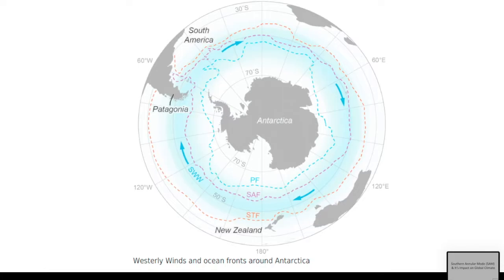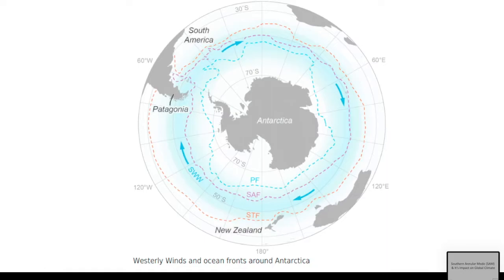In the case of negative SAM, everything reverses. In negative SAM, the westerly winds expand to a larger region. The low pressure is now shifted from Antarctica outward. Because of this shift, Patagonia will cool down, and the region becomes cooler than under positive SAM. There is also decreased upwelling in Western Antarctica and the Antarctic Peninsula.